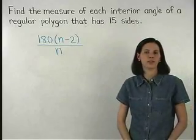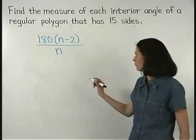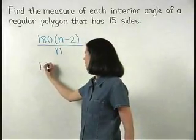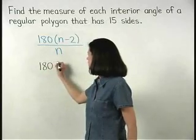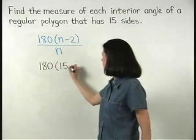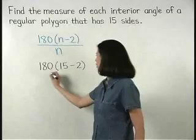So plugging a 15 in for the n in our formula gives us 180 times 15 minus 2 over 15.